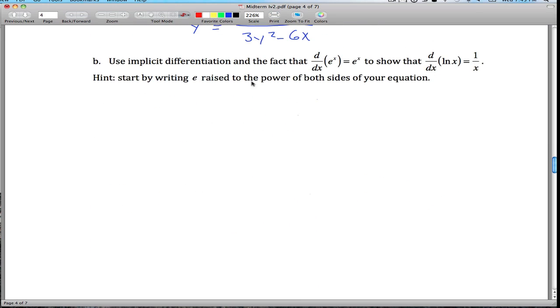Part B, let's see, this guy, we're asked to find the derivative of the natural log of x, we're given the answer, we just need to kind of prove that, so we got y equals natural log of x, and the way we can get this answer is, we're kind of given a hint in here, we're told to use the fact that the derivative of e to the x is e to the x,